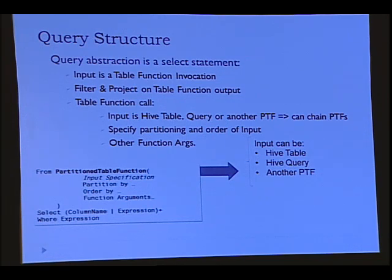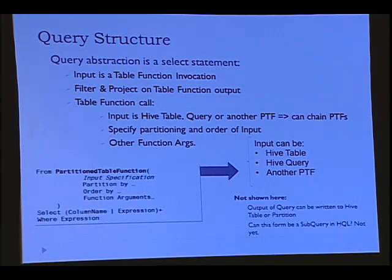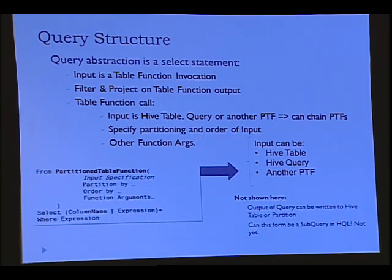The structure of our queries is really simple. The input to the query is a function table invocation, and then you can filter and project the output. The function table invocation has three possible inputs: a Hive table, a Hive query, or another PTF. This way you can chain PTFs together. You specify how to partition and optionally order the input, and then give other arguments. The output can be written to a Hive table or Hive partition. It cannot yet be a subquery in a Hive query, because we sit on top of Hive and don't run inside Hive yet.